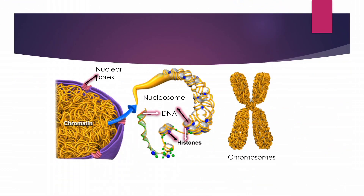The difference between chromatin and chromosomes: chromatin is a thread-like structure — it is the loosely packed form. DNA has a double helical structure; it is wrapped around histones forming nucleosomes, making up chromatin. Chromosomes are the fully condensed form of chromatin. So chromatin condenses into chromosomes during cell division.